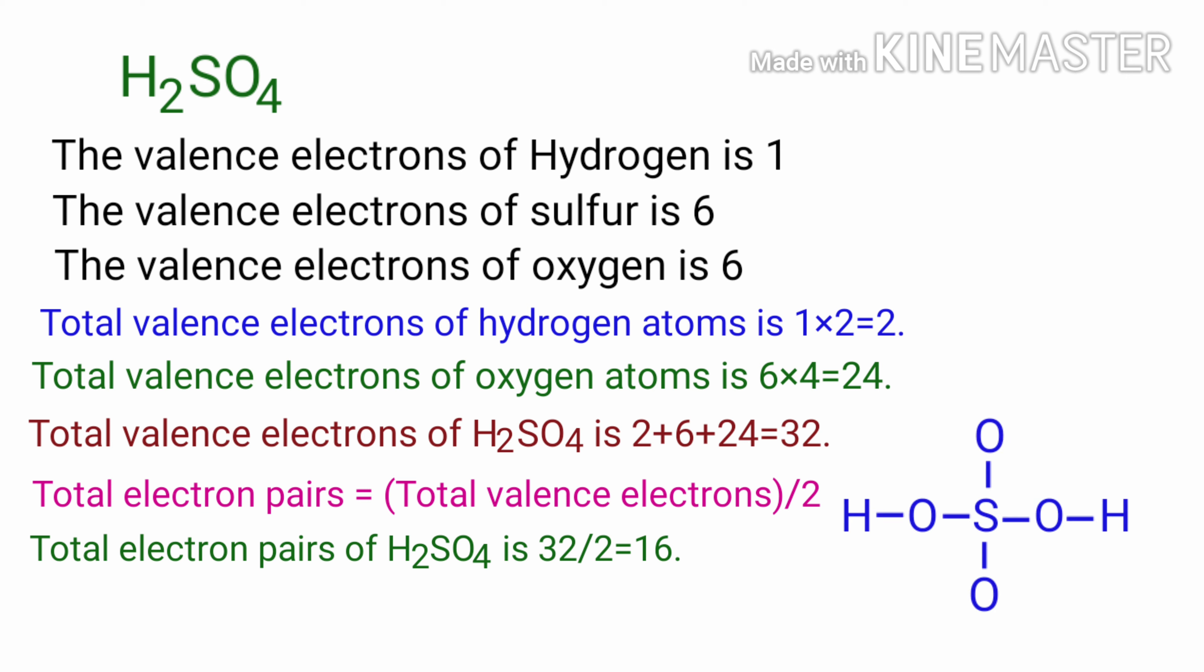Sulfuric acid is a dibasic acid. It can release two H plus ions in the water. Therefore, there should be two OH groups in H2SO4 molecule. There are total six bond pairs present.